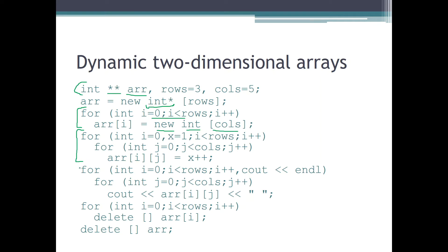We print the whole data structure to the screen, and afterwards we release memory — first for the rows allocated with the 'new' command, and then when all the rows are deleted from memory, we also release the memory allocated for the variable 'r' itself. We delete this memory space at the very end. This was our standard approach for creating a two-dimensional array dynamically.